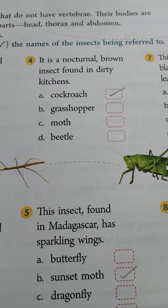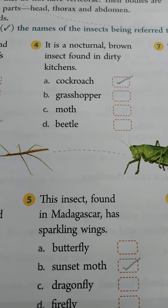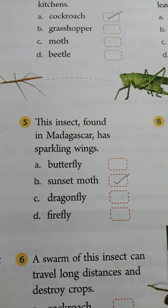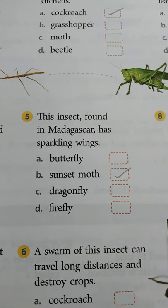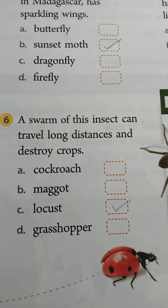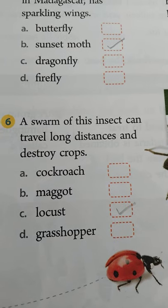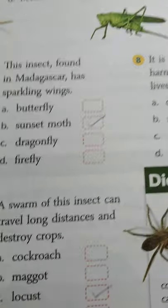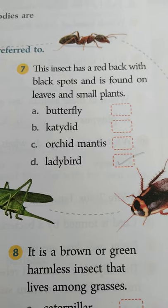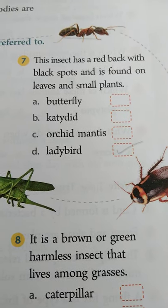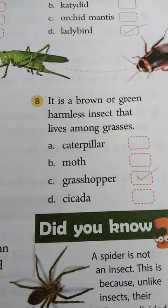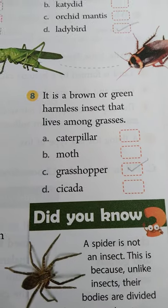It is a nocturnal brown insect found in dirty kitchens — it is a cockroach. The fifth one: the insect found in Madagascar has sparkling wings — sunset moth. A swarm of this insect can travel long distances and destroy crops — the answer is locust. The insect has a red back with black spots found on leaves and small plants — that is a ladybird. A brown or green harmless insect that lives among grasses — that is a grasshopper.